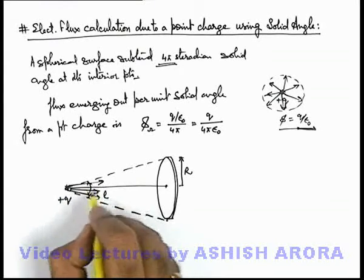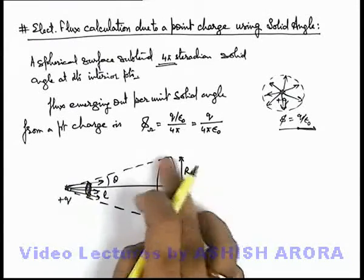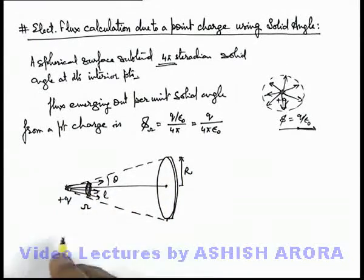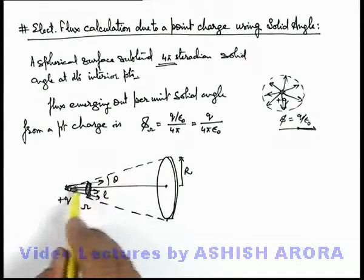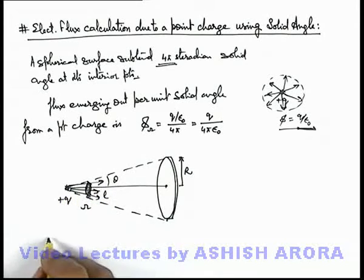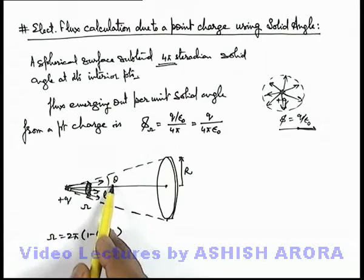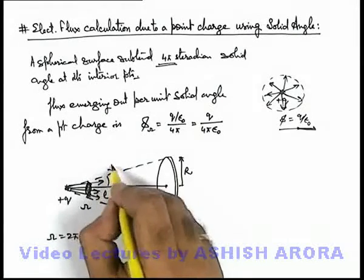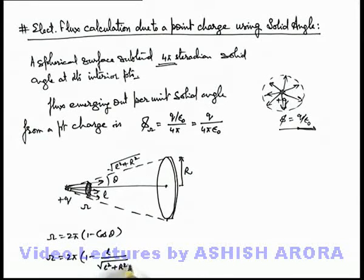For this cone, if its half angle is theta, we can easily calculate the solid angle subtended by the disc at the vertex of the cone. This solid angle omega of a cone enclosed by its lateral surface at the vertex is related to its half angle as 2π(1 − cos θ). Here cos θ equals l divided by root of l squared plus r squared, so the solid angle is 2π(1 − l/√(l² + r²)).